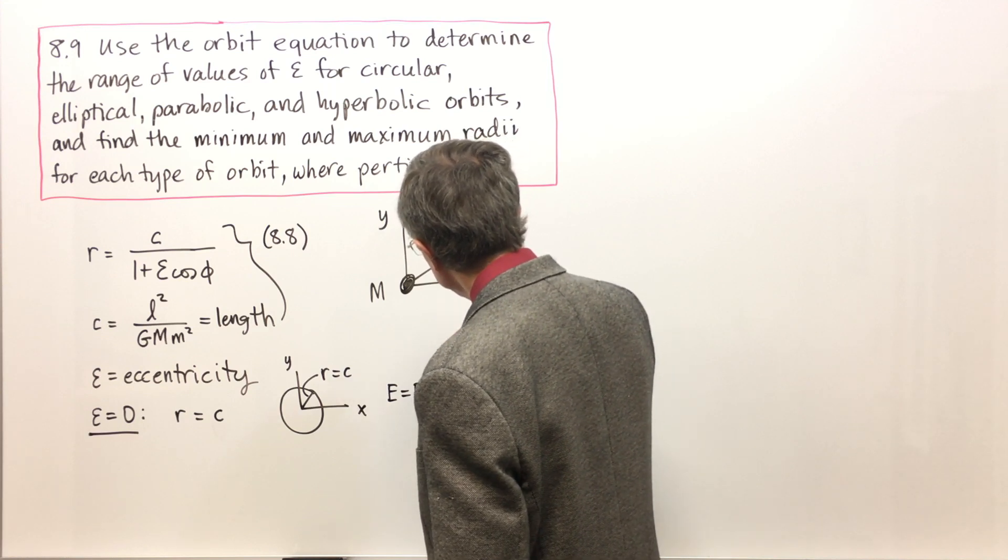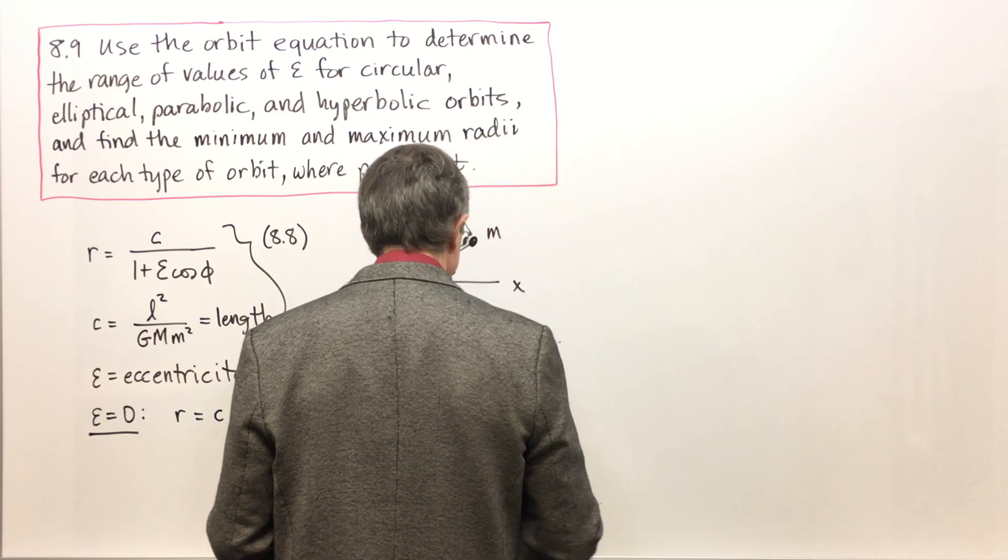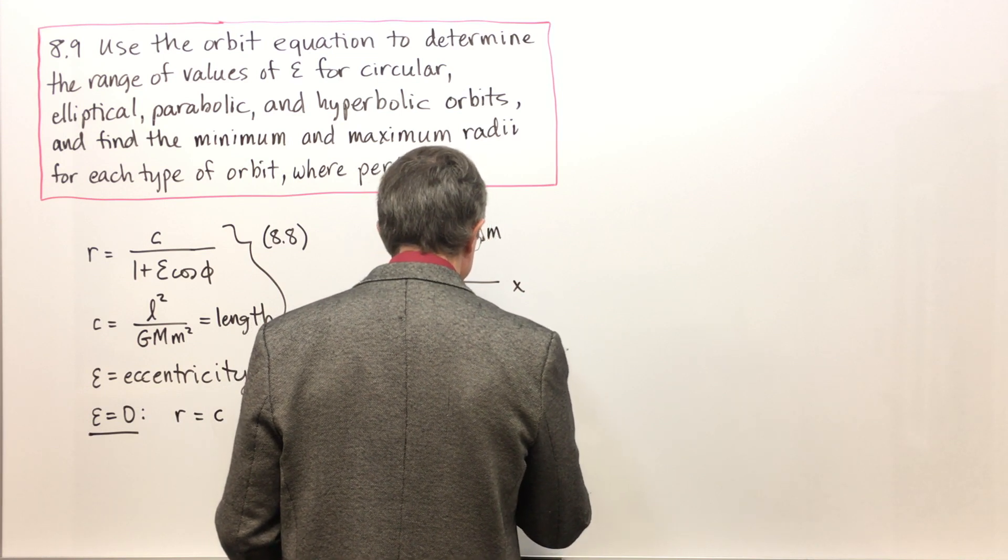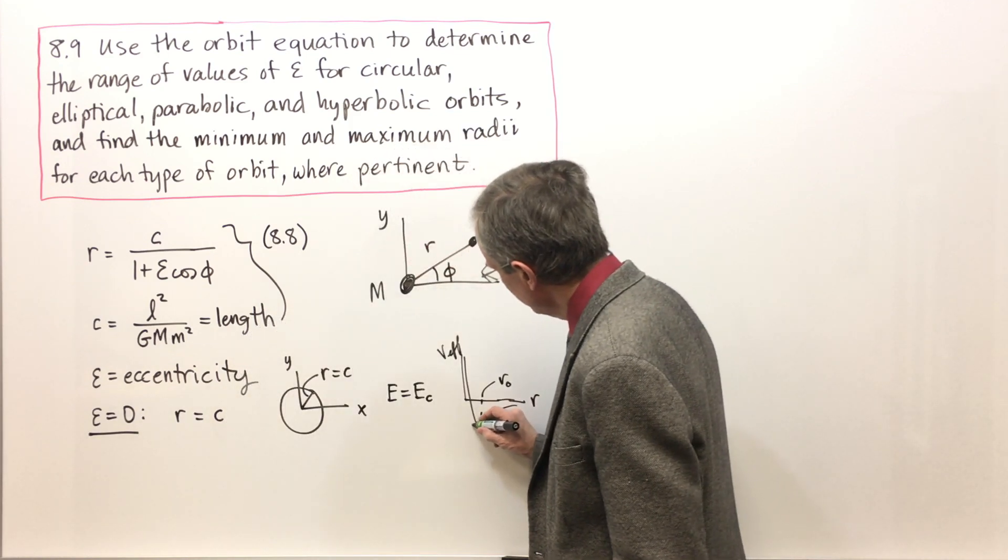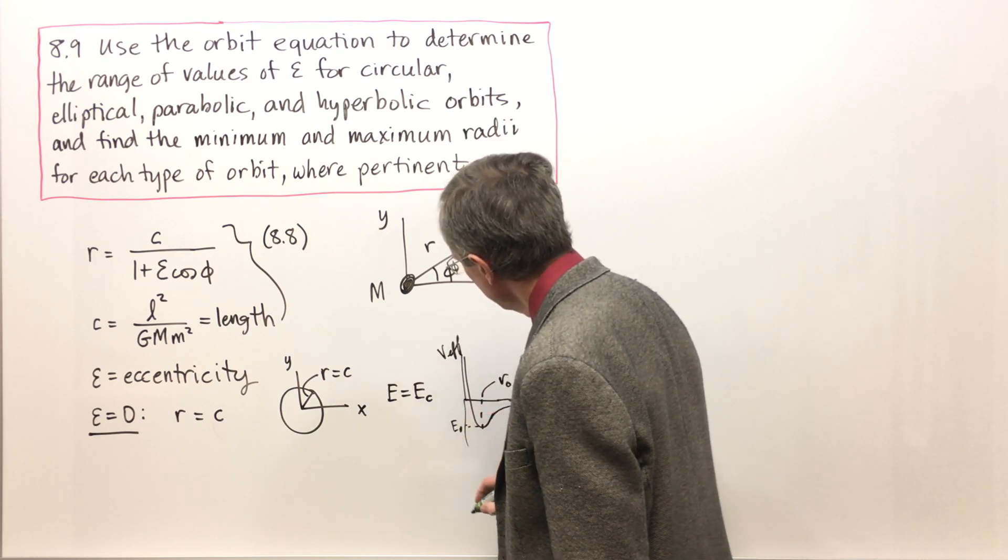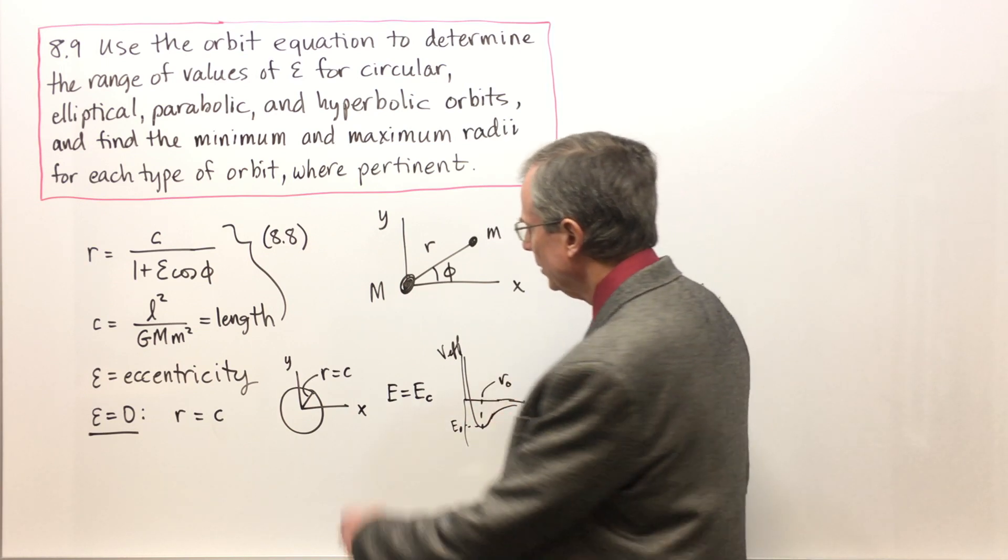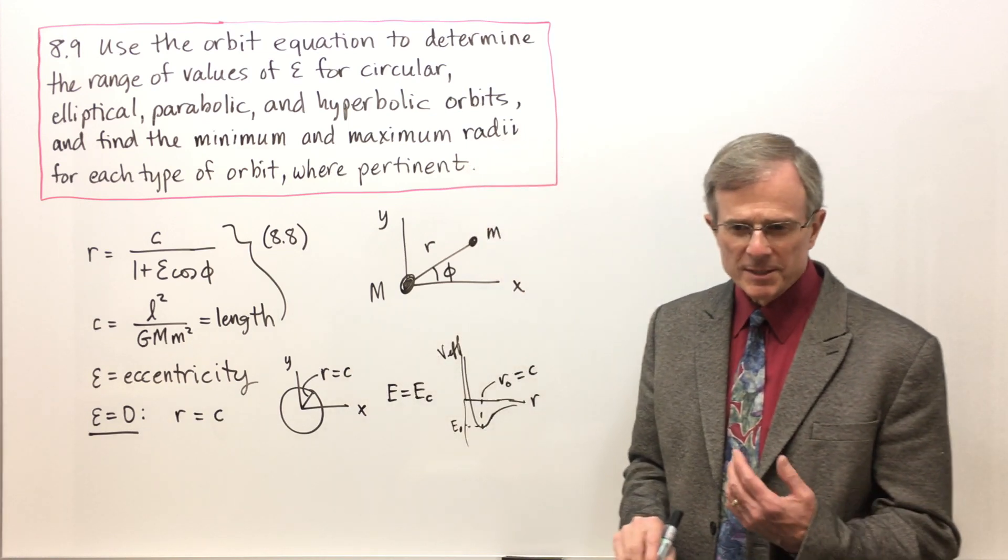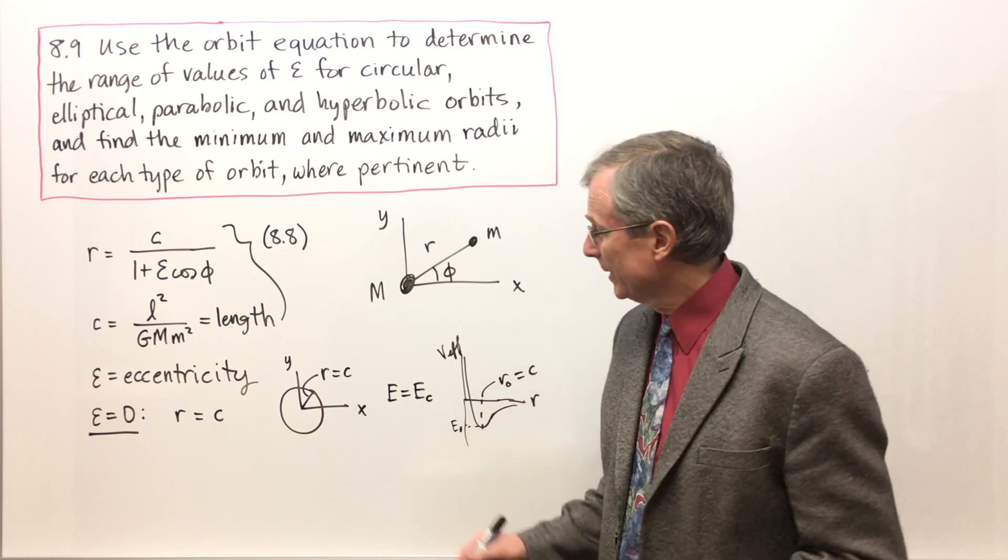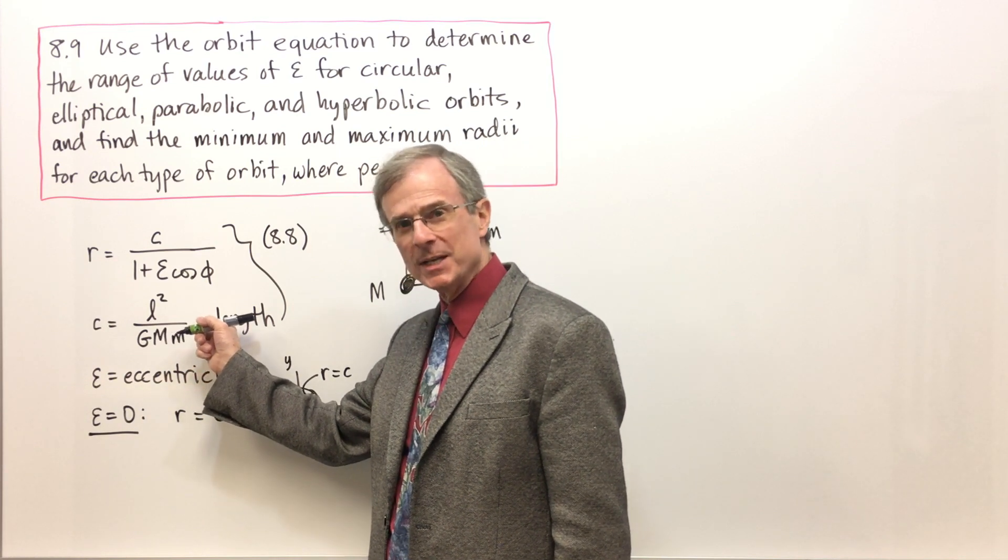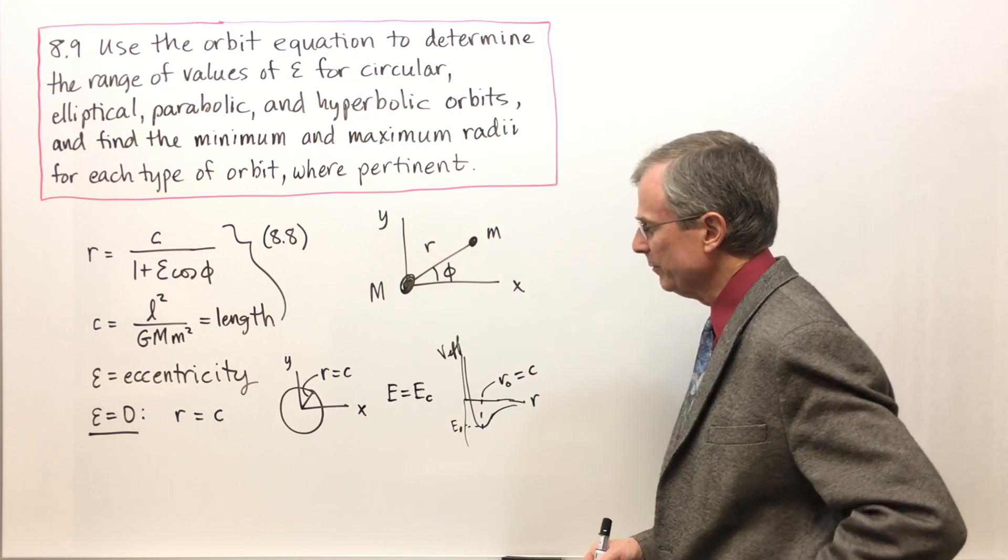If we go back a concept or two ago, we said the total energy was going to be some constant. If you plot V effective as a function of R, we talked about E zero at that minimum where V effective occurred at R zero, and we've just shown that R zero is C. Notice that we have the actual radius of the orbit from the physics. It's given by that constant C, which is given by the physics. That's a circle.